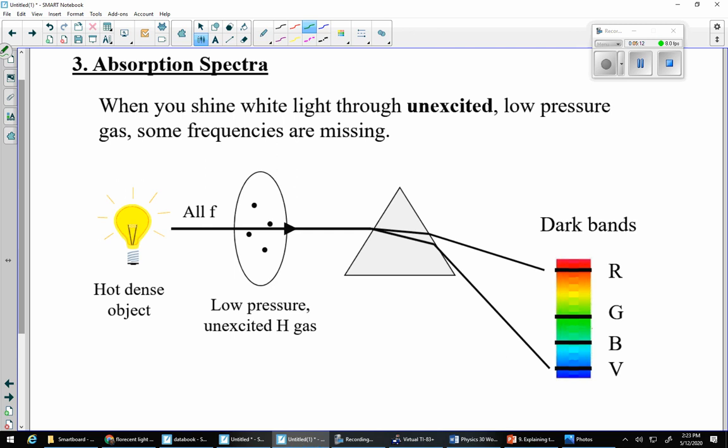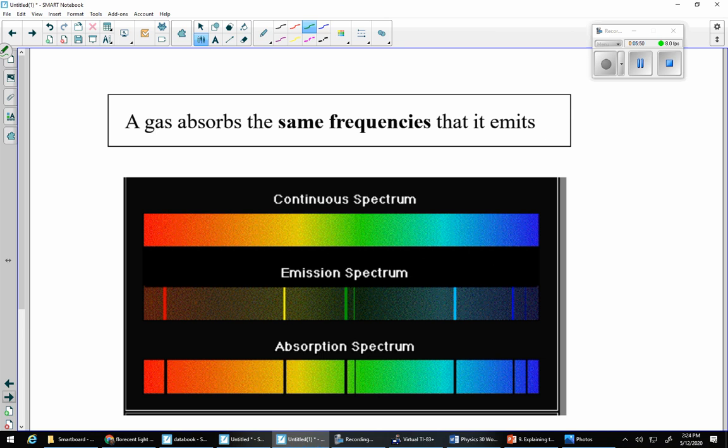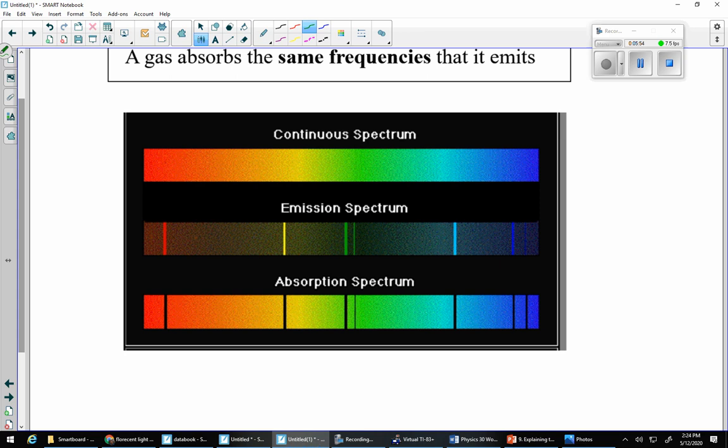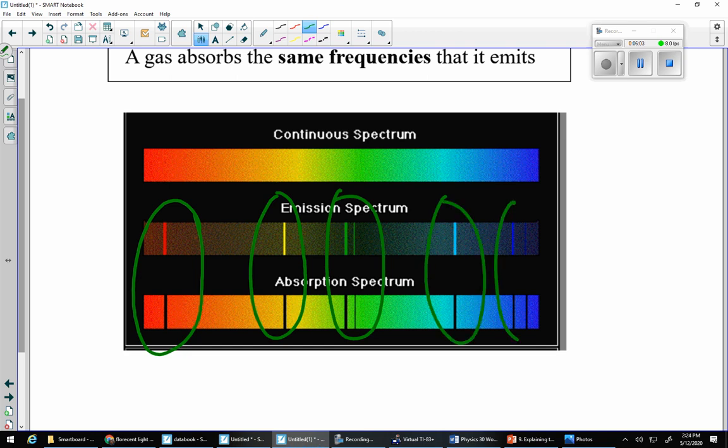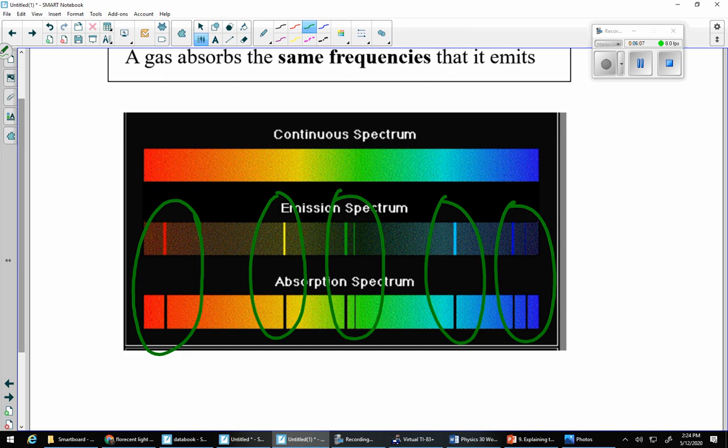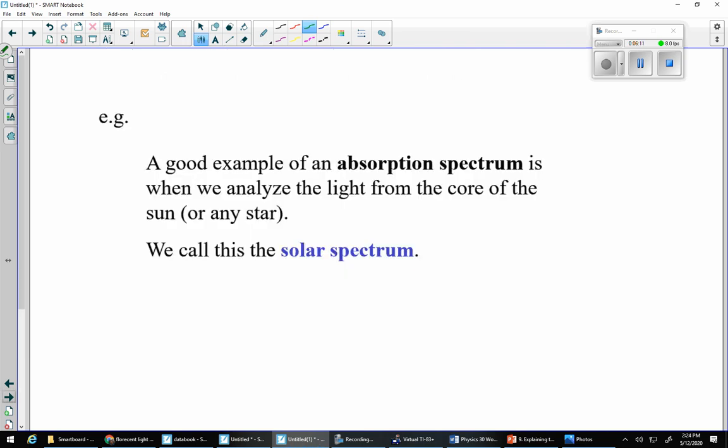The next one to talk about is an absorption spectra. So, an absorption spectra is when we shine white light, so remember, white light is a continuous spectrum, it's all the frequencies, through an unexcited, low-pressure gas, and what happens is it's like some of those frequencies get absorbed. Now, this is a low-pressure hydrogen gas. What do you notice about the dark bands or the missing bands for hydrogen gas versus the emission spectra for hydrogen gas? It's the same things are missing. So, absorption and emission spectra, the dark bands line up with the light bands. The dark bands from the absorption spectra match up with the light bands from the emission spectra. Very, very interesting. They match just about perfectly.